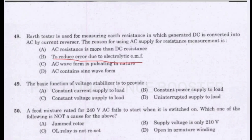Question 49. The basic function of a voltage stabilizer is to provide: Option A - Constant current supply to load. Option B - Constant power supply to load. Option C - Constant voltage supply to load. Option D - Uninterrupted supply to load. Answer is Option C: Constant voltage supply to load.